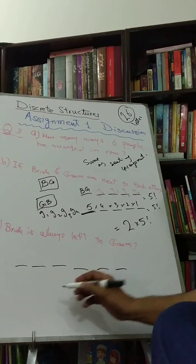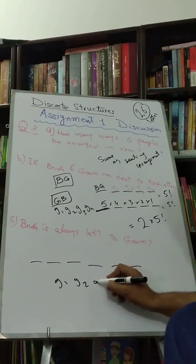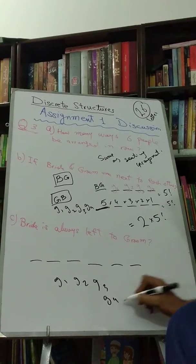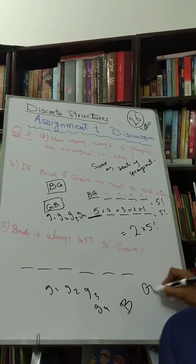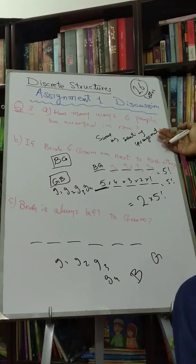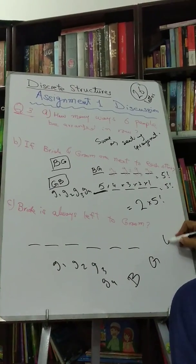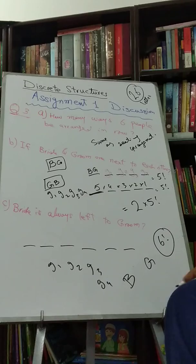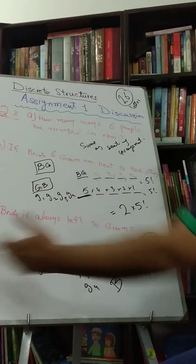So we have four guests, G1, G2, G3, G4, and we have a bride and we have a groom. So if we arrange them, it's in the part A, the answer was six factorial. So in how many ways bride can always be on the left?